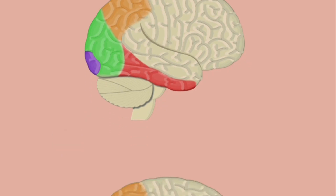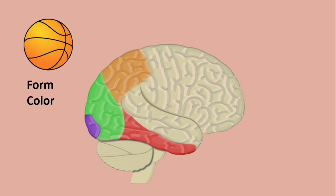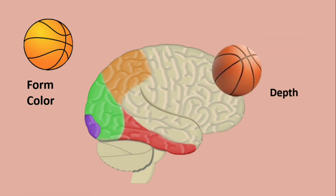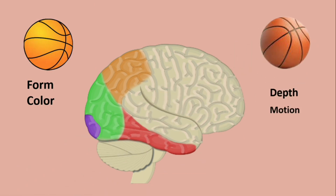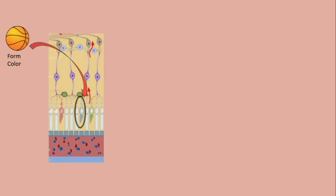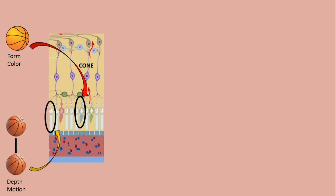The secondary visual cortex processes form, color, depth, and motion of objects and also associates this information with memory. Information about form and color originates in the central retina and is related to the cone stream. Information about motion and depth originates in the peripheral retina and is related to the rod stream. Both types of sensory input go to the primary visual cortex.